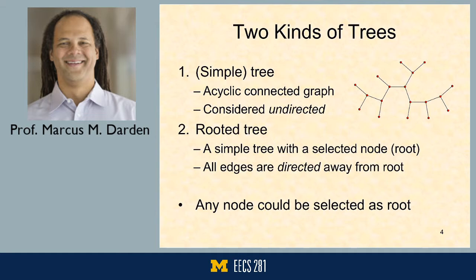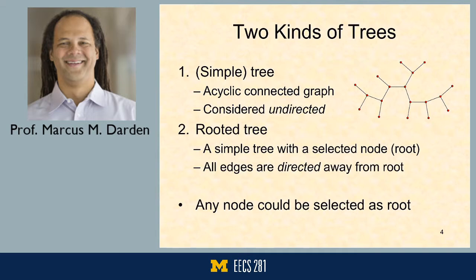In a simple tree, we don't really think of them as having a direction, so we consider them undirected. We'll be looking at rooted trees, which are simple trees where you've picked one node and said all things flow outward from there. All the edges are directed away from that root node. CS trees have this property that they grow downward instead of upward. Any node could really be the root in a general definition.